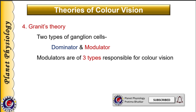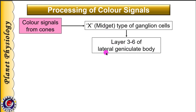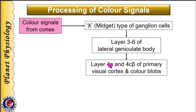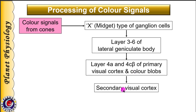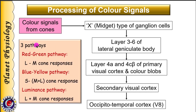Now let us look at the processing of color signals. Colors are detected by cones, and signals are sent to X-type ganglion cells, also called midget cells. These ganglion cells transmit signals to the parvocellular layer of the lateral geniculate body — layers 3 to 6. From here, the geniculocalcarine tract carries signals to layers 4A and 4C-beta of the primary visual cortex, and then to color blobs in layers 2 and 3. Signals then go to the secondary visual cortex and then to the occipitotemporal cortex, also called area V8, which is concerned with perception of color. It is proposed that the geniculocalcarine tract has three pathways to transmit color signals.